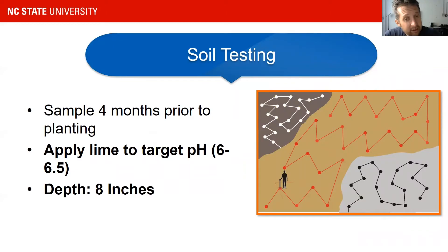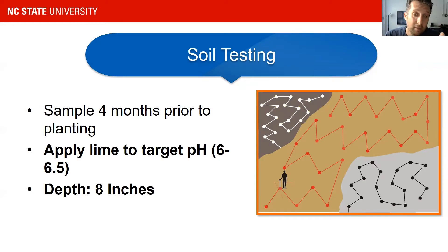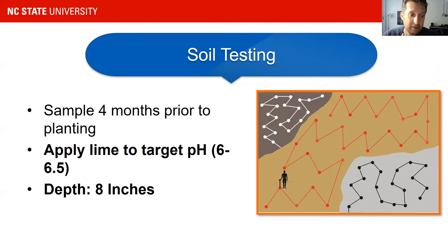Soil testing is pretty important. It's very important that you take the soil test in the correct way. We recommend a zigzag sampling scheme across a uniform area of your field. If you have, for example, three different soil types or areas where you see different wheat growth — that usually indicates differences below ground — you would sample all three areas in a zigzag scheme. Take plenty of samples, combine them into a composite sample, and send it to a testing service. In North Carolina, that goes through the NC Department of Agriculture.